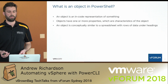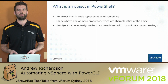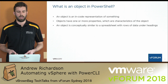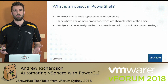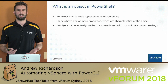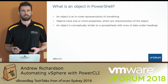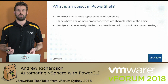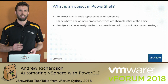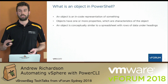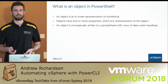Objects have one or more properties, and properties are simply characteristics of an object. If you haven't seen an object before or haven't worked with PowerCLI, an easy way to think about it conceptually is that an object is similar to a spreadsheet with rows of data under headings, where our rows of data are the objects and our headings are the different attributes.